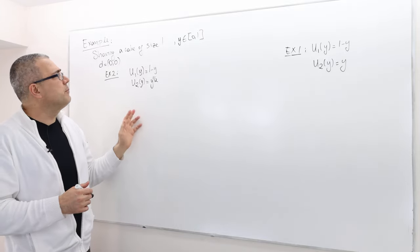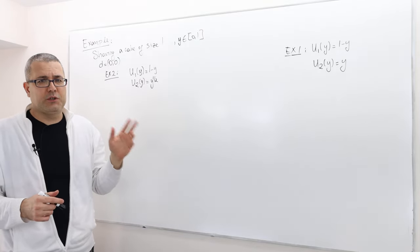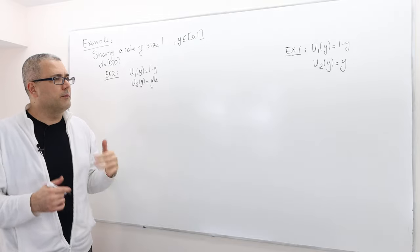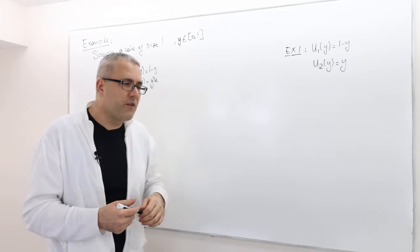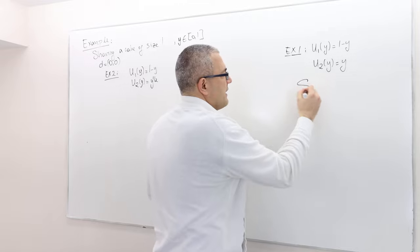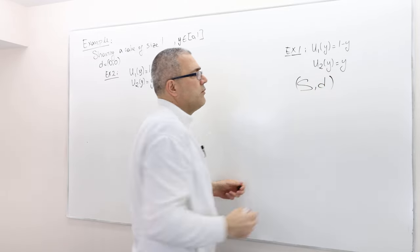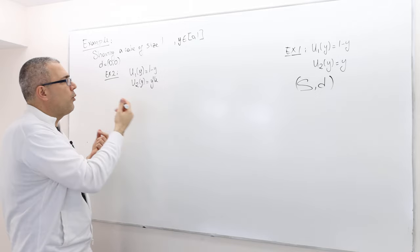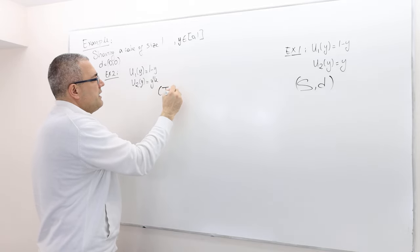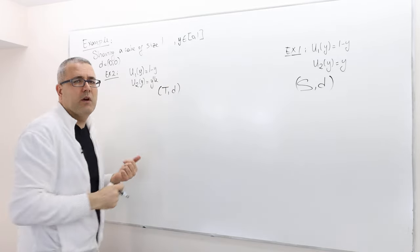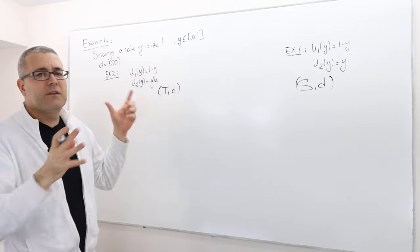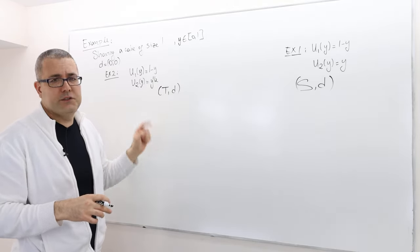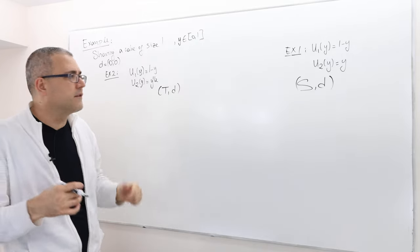I'm going to apply the Nash bargaining solution to both of those problems. But before that, let's draw the set S and D. D in both instances is the zero-zero point. Let's call the feasible payoff sets differently, because the utilities are different in these two problems.